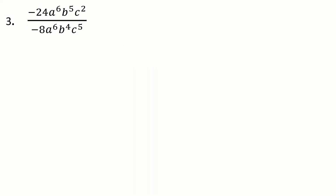Question three, similar idea. We've got coefficients, a's, b's, and c's. I'm going to write out a little bit less this time — not writing out all six a's, five b's, and two c's. So let's start with the coefficients: minus 24 divided by minus 8. First off, minus divided by minus is a positive. And then 24 divided by 8 is 3. So I can just go ahead and write a 3.